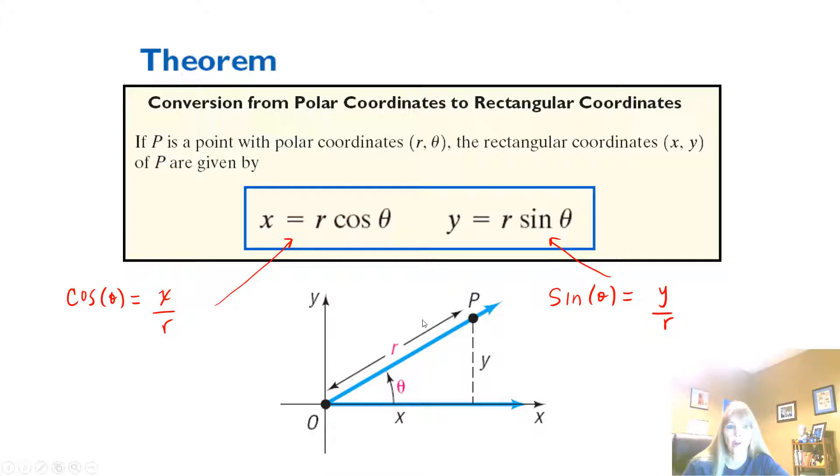Because if I take whatever r is and I multiply it by the cosine of the angle, I get my x value. If I take whatever r is and I multiply it by the sine of whatever the angle is, I get my y. Fantastic, isn't it? Yeah, it's pretty cool.